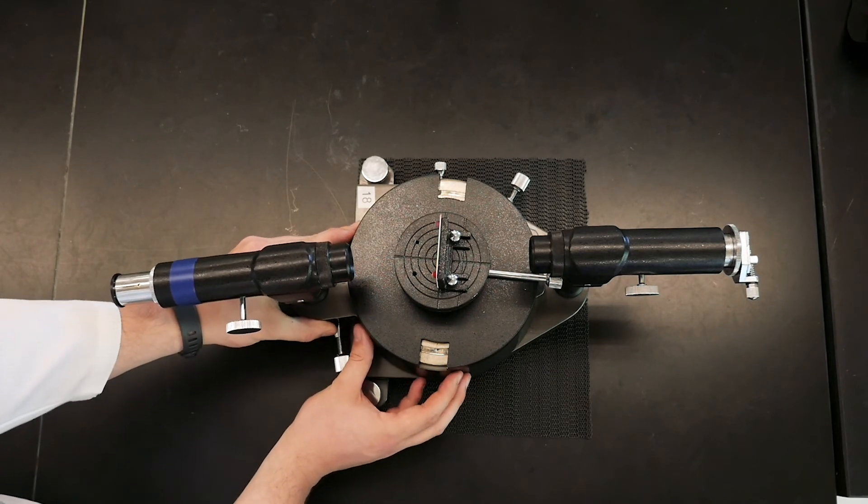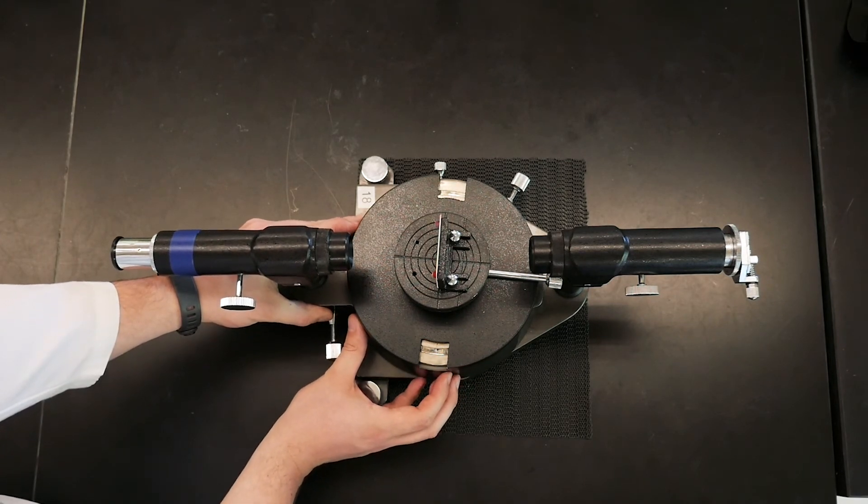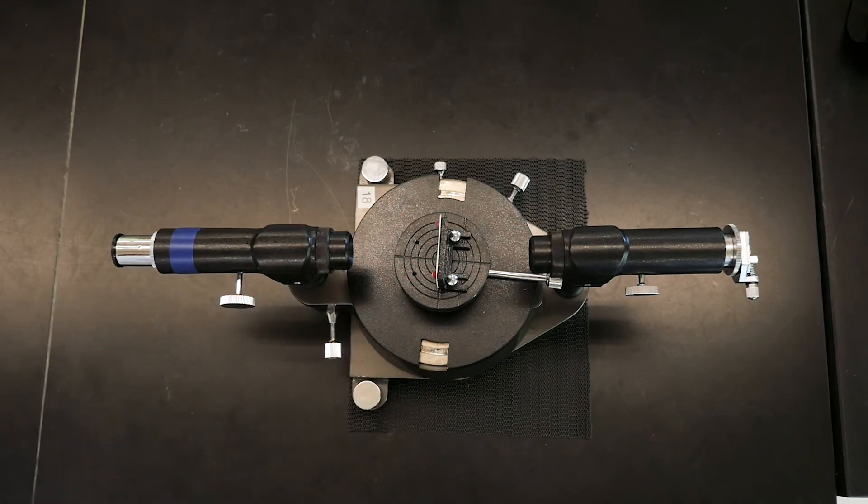To operate your spectroscope, you'll need to make sure it's properly aligned and calibrated. So first align the telescope with the collimator so that you're looking directly through the diffraction grating.